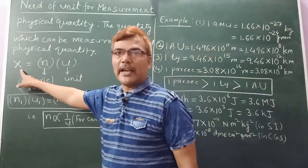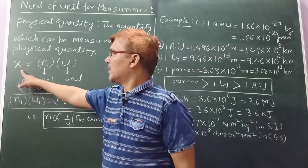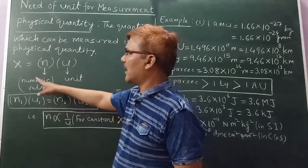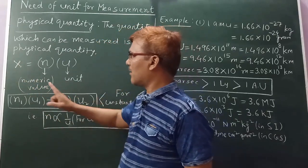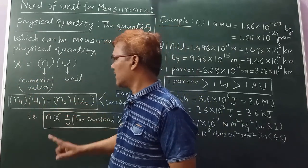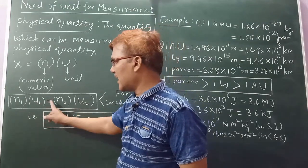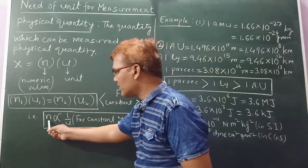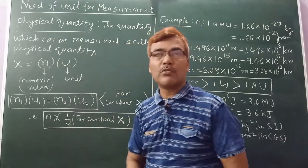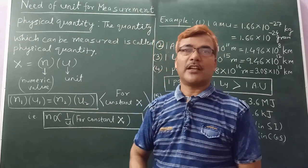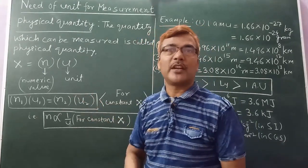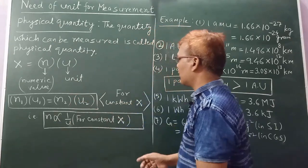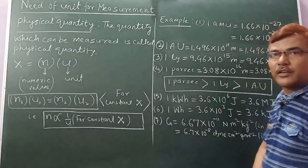Here we have taken magnitude of physical quantity, which is in terms of product of numeric value and unit. If x is constant, then in this case n1 u1 equals n2 u2. This means the numeric value and unit are inversely proportional to each other. If smaller unit, then numerical value will be larger. If bigger unit, then numerical value will be less.